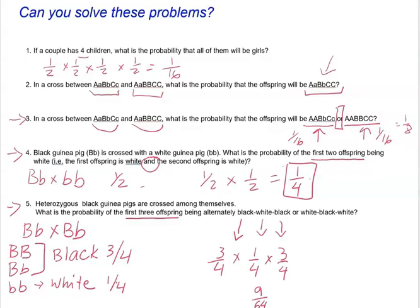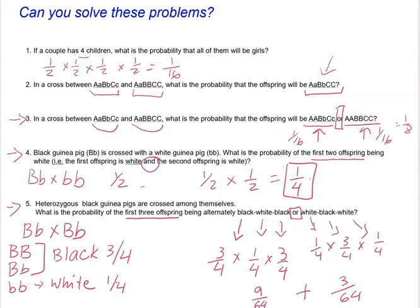For the pattern white-black-white: multiply 1/4 × 3/4 × 1/4 = three out of 64. Since we're looking for either pattern, we add the fractions: 9/64 + 3/64 = 12/64, which simplifies to three out of 16. That is the final answer.